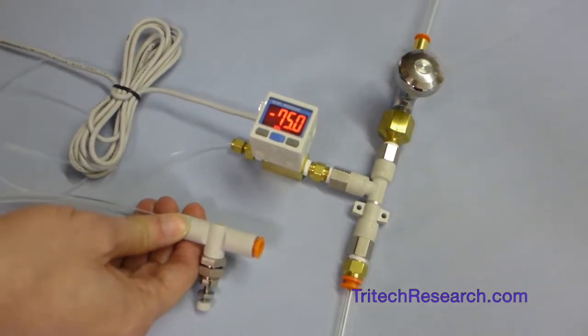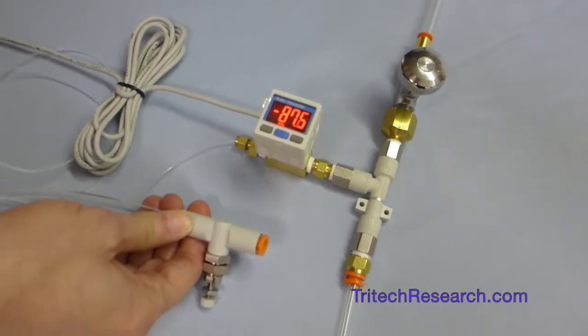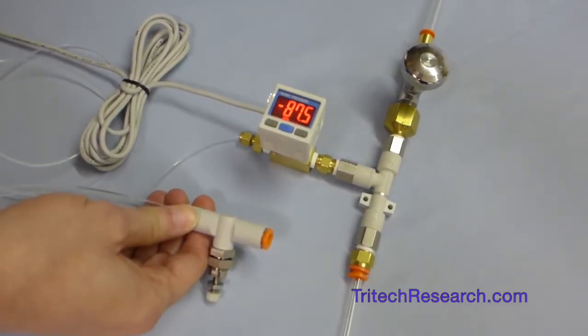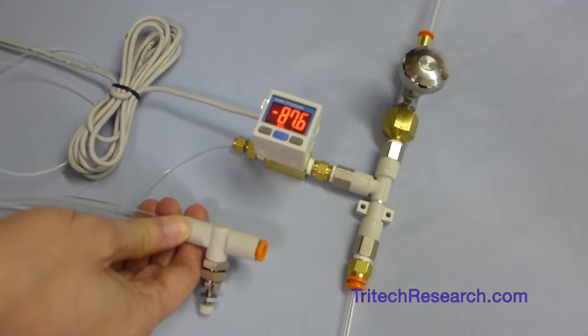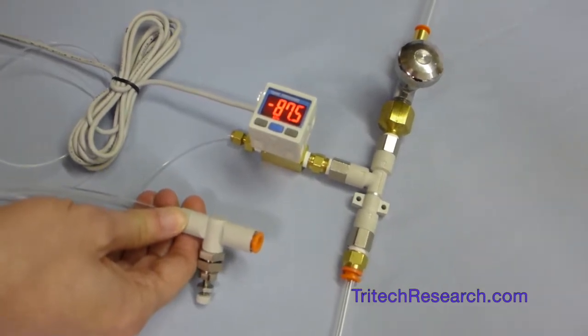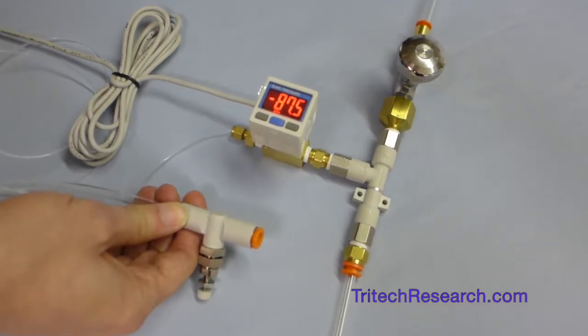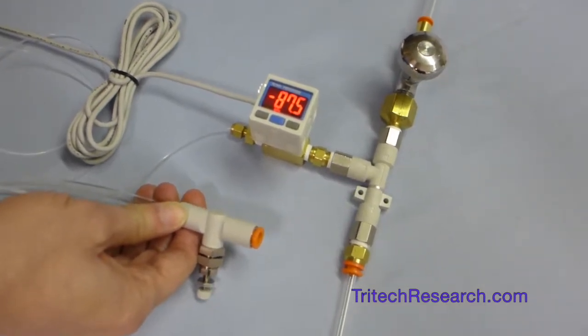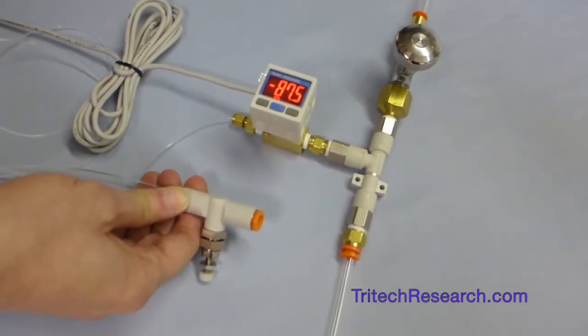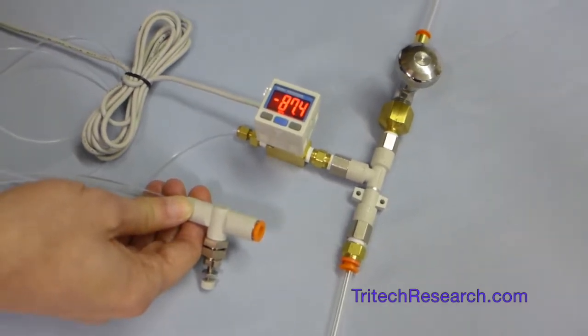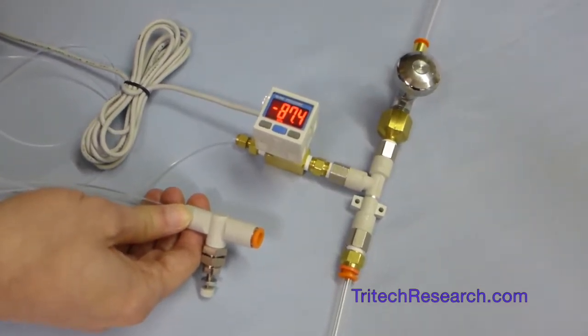So when the system is closed at the other end you can see that we're getting around minus 87 kPa. So that's a little bit better than minus 12 psi out of a possible minus 14, which would be a perfect vacuum between 14 and 15.